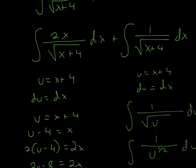Even though now we have the square root of u in the denominator after u-substitution, we still have x in the numerator. We can't take the integral of two different variables. So what we can do is use the same substitution to get an expression for 2x. We take u equals x plus 4 and try to get 2x.